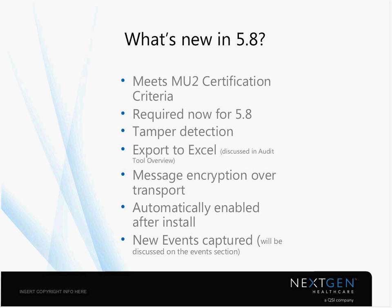Also new for 5.8 is tamper detection — if somebody went in and changed hard-coded values in SQL or something along those lines, we'd be able to actually see what they tampered with. There's also a new export tool — you can export your data to an Excel spreadsheet and manipulate values through Excel. We know there are Excel gurus who live and die by Excel, so you can easily export audit information. Additionally, messaging encryption over transport means any data that's sent out is encrypted, and you need another utility to read that encrypted information.